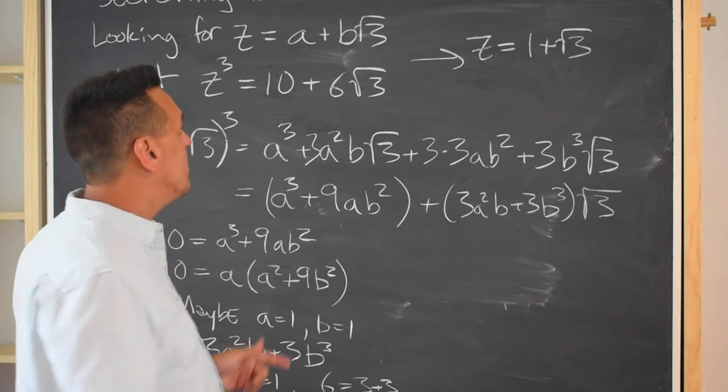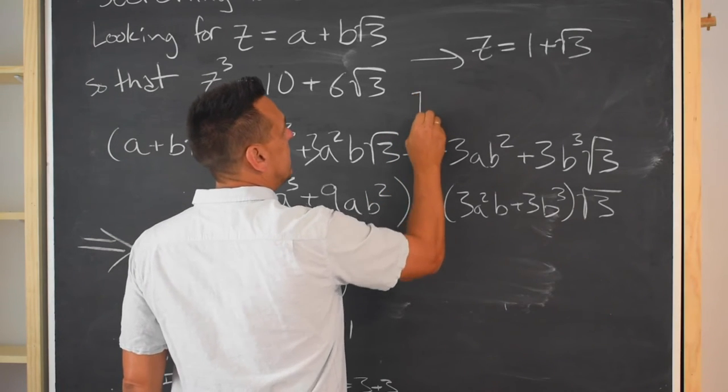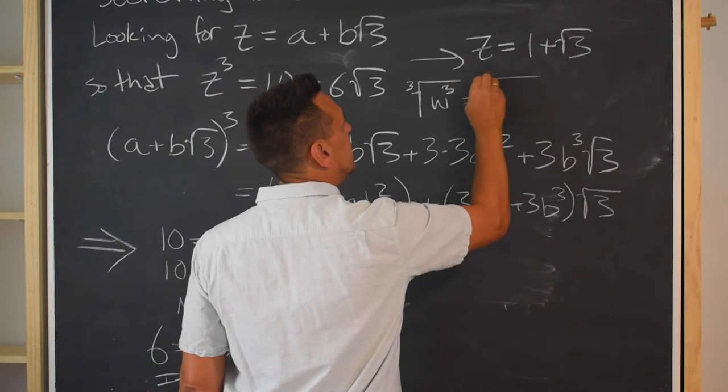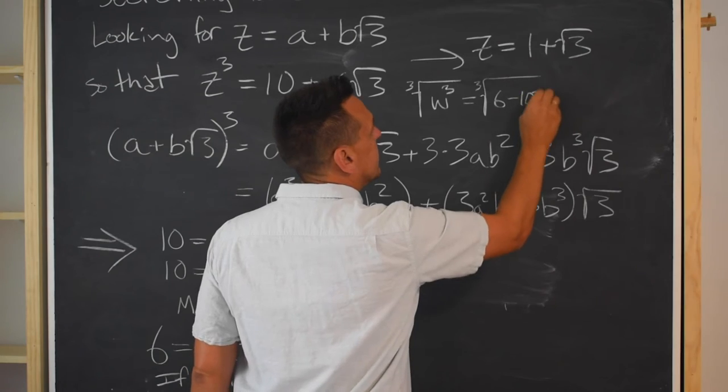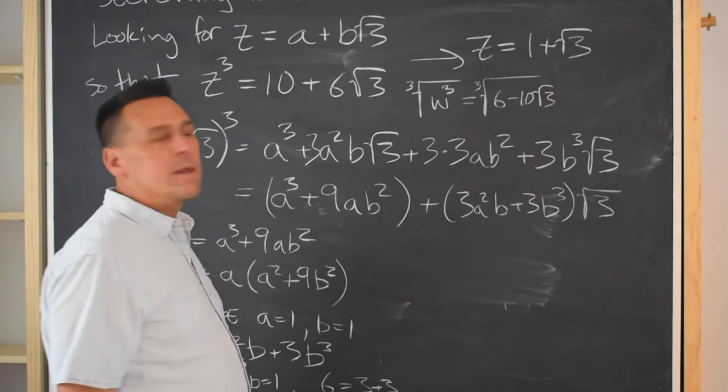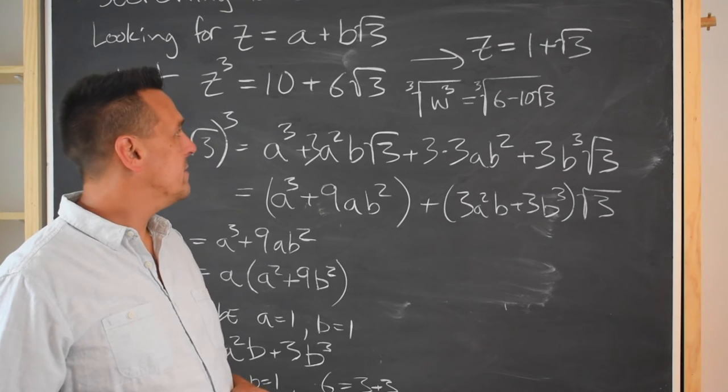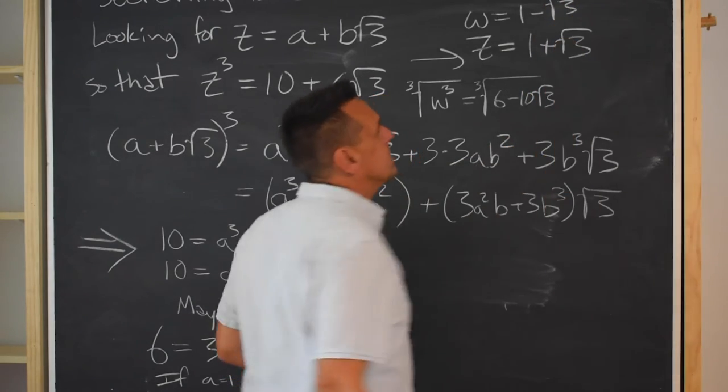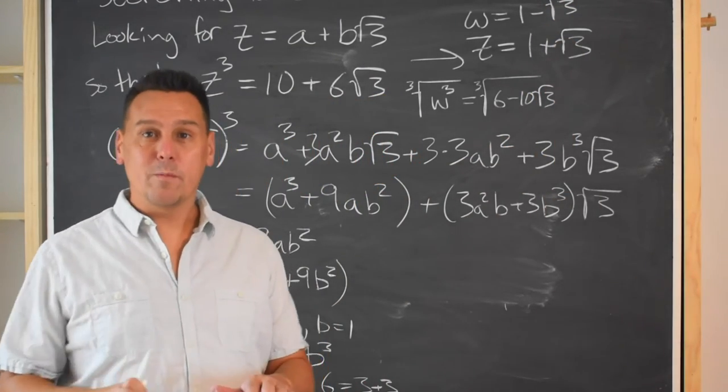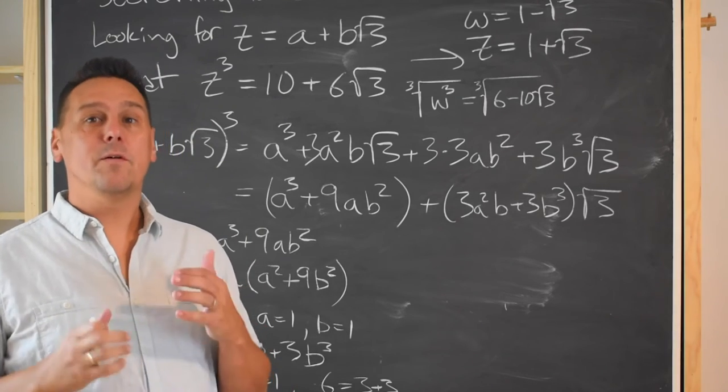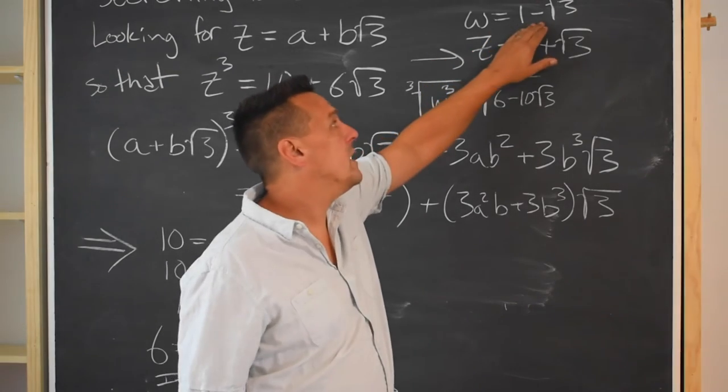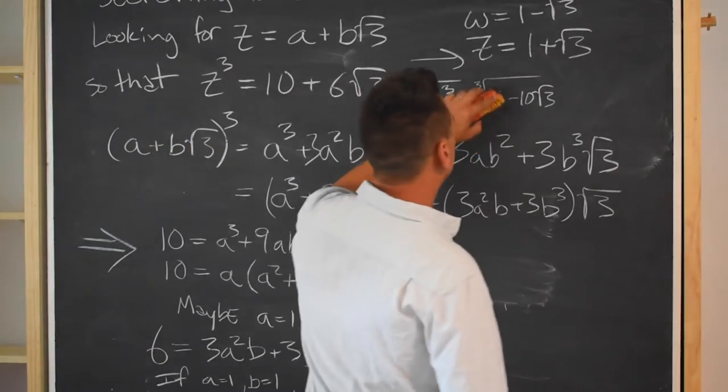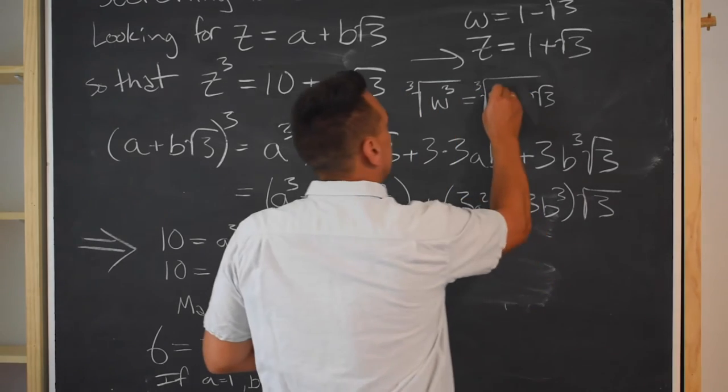That's the number where if you cube it, you get 10 plus 6 root 3. And we'll go back to the cubic in just a second. Remember that I also needed a number to give me the cube root of w cubed. I wanted it to be 10 minus 6 root 3. So, any guesses for what w ends up being? Yeah, why don't we try it? So, w is 1 minus the square root of 3. Again, quick homework break. Stop the video. Cube it and see if you get 10 minus 6 root 3.